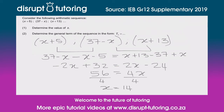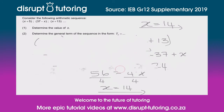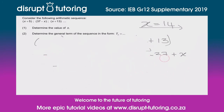That will get you full marks for the first question. I'm going to write it up here so I've got access to it for the second question, and then I'm going to erase the first question — feel free to rewind, pause, or fast forward through this part. Okay, so the second question asks us to determine the general term of the sequence.